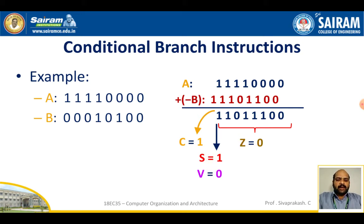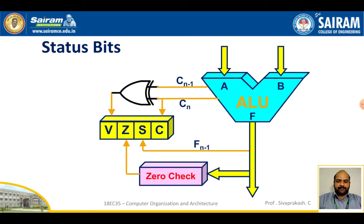The four flags checked are: carry flag, sign flag, overflow flag, and zero flag. To understand how these are actually generated, consider two input data values A and B feeding into an ALU (arithmetic and logic unit), producing an output F.